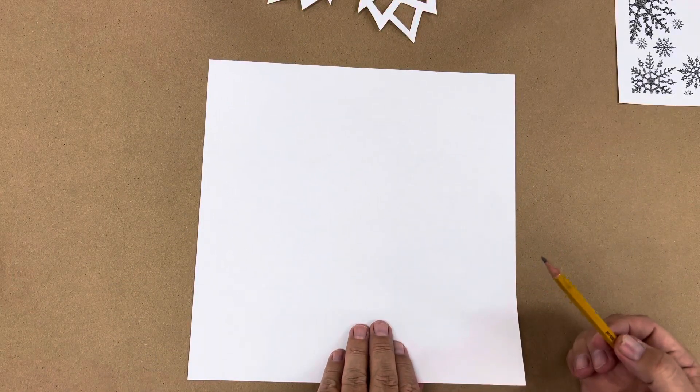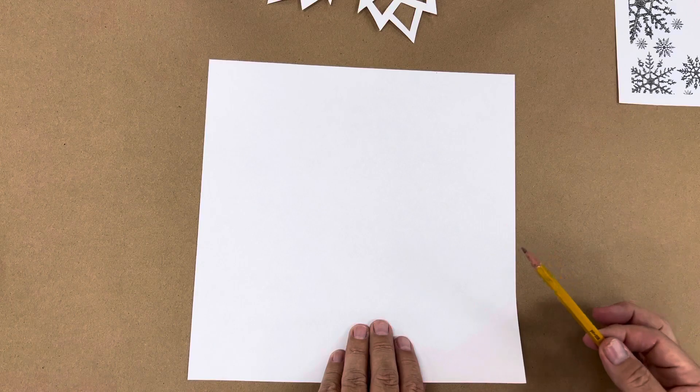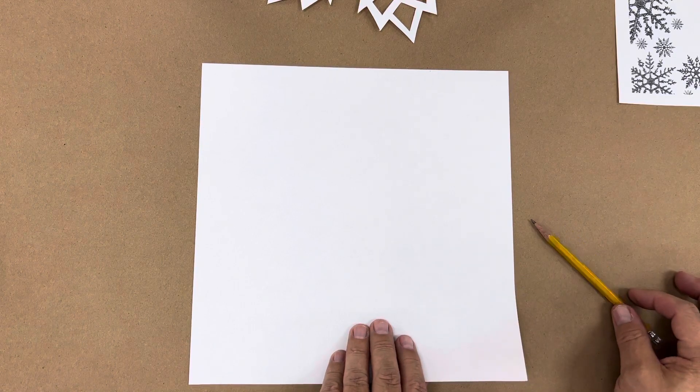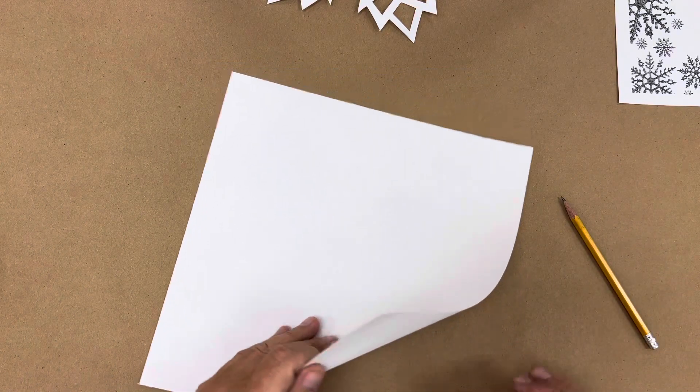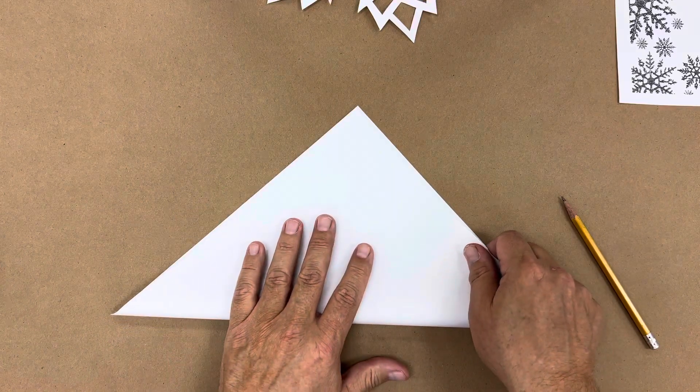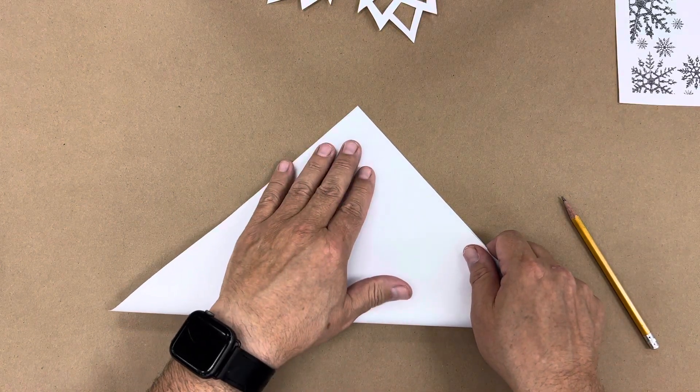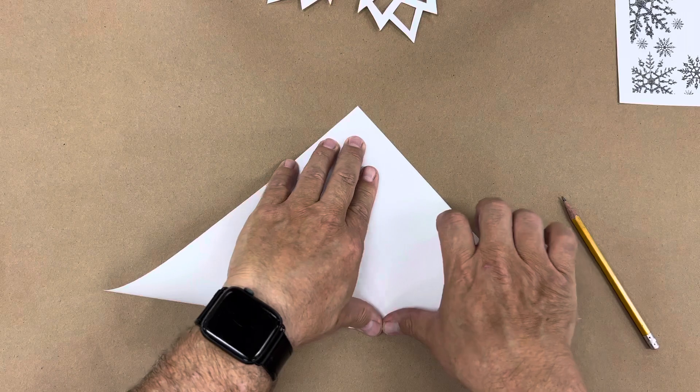And you might need a pencil the first time you do this, so you can make some marks, but after you get used to it, all you need is to see the little fold pinch marks. So we're going to take this and fold it in half, from corner to corner, and you want to be as precise as you can.